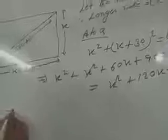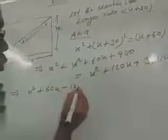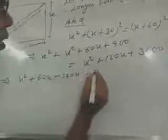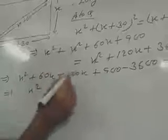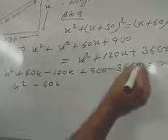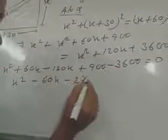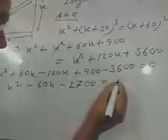Then you write, x square plus 60x minus 120x plus 900 minus 3600 is equal to 0. Or, x square minus 60x minus 2700 is equal to 0.